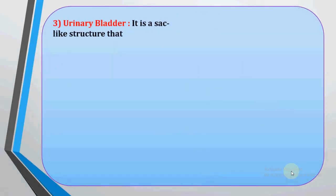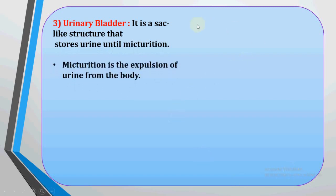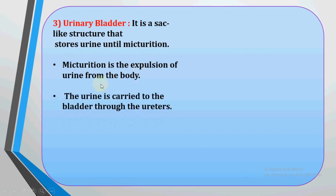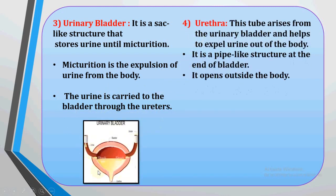The next part is the urinary bladder. It is a sack-like or bag-like structure that expands as it fills with urine, becoming balloon-shaped when full. It stores urine until micturition. Micturition is the expulsion of urine from the body. The urine is carried to the bladder through the ureters.